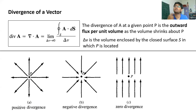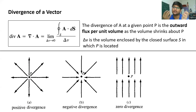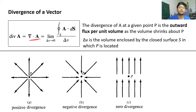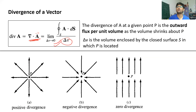Divergence of any vector A at a given point P represents the outgoing flux per unit volume, because you have shrunk that volume to a single point. It is represented by del dot A — the dot product of the del operator and the vector. The outcome is a scalar quantity. It is also represented by the closed surface integral of vector A divided by delta-V as the volume shrinks to zero, where delta-V is the volume of the surface S.